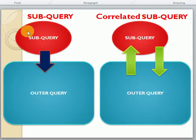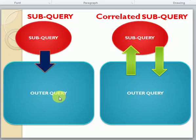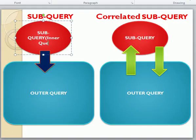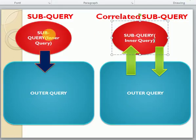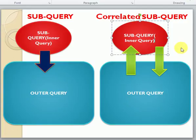In normal subqueries, your subquery will be executed first and that result will be passed to your outer query only once. The outer query will be executed based on your inner query result. So the inner query will be executed once, and based on that result your outer query will be executed — that is a normal subquery.